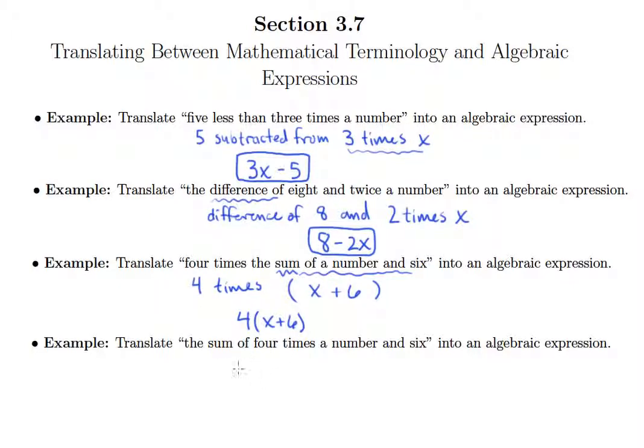Now this one says "the sum of four times a number and six." So "the sum of" we're going to add. What are we going to add? Four times a number and six. So here we end up looking like this: 4 times a number plus 6. So you see, we got to really pay attention to the words used, because we get two things that look very similar but are actually quite different from one another.